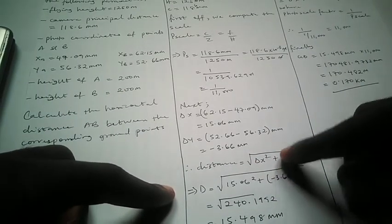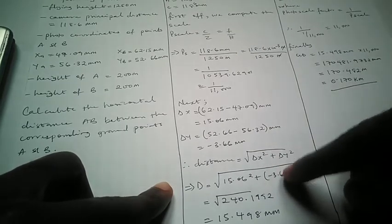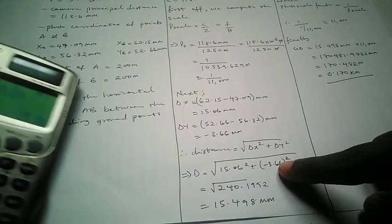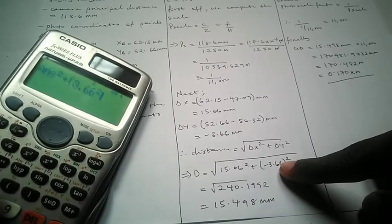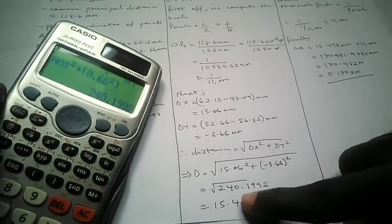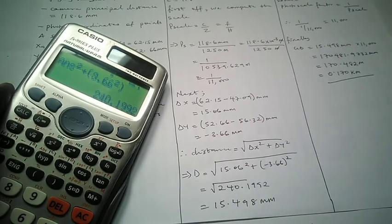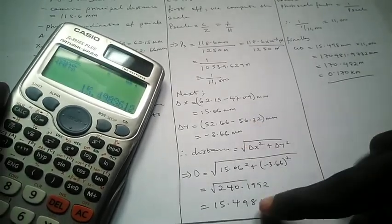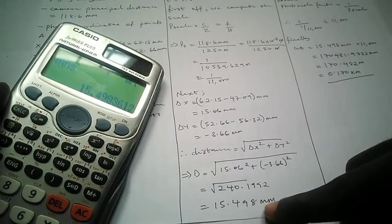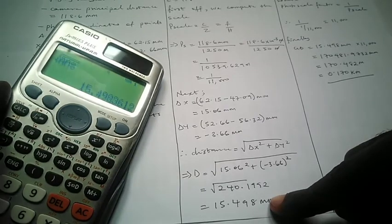The formula for distance is: distance = √(Δx² + Δy²). So we have √(15.06² + (−3.66)²) = √(226.8036 + 13.3956) = √240.1992. Finding the square root gives us 15.498 millimeters as the photo distance. However, this is not the ground distance.